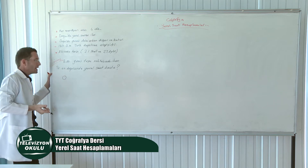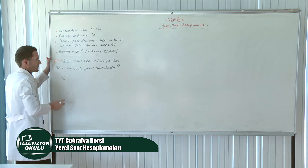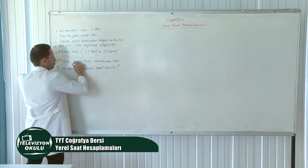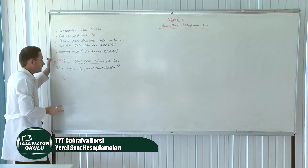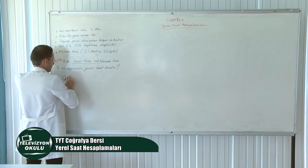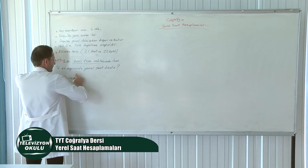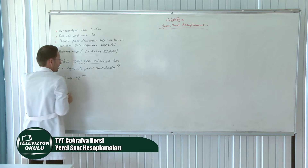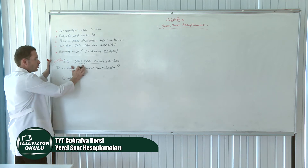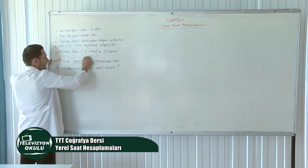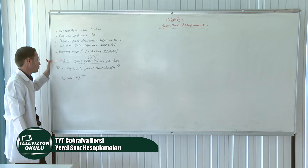Yani nereden bahsediyoruz? İngiltere'de Londra'dan, Greenwich'ten bahsediyoruz. Güneş tepe noktasında demiş; güneş tepe noktasında ise saat 12.00 demektir. Başlangıç meridyeninde saat 12.00'dır arkadaşlar. Güneş tepe noktasında diyorsa saatin 12 olduğunu anlatmaya çalışıyordur.